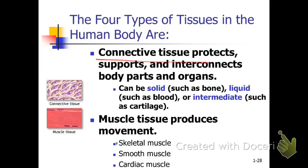Then there's muscle tissue, which comes in three types. This includes skeletal muscle — the kind that moves your skeleton — smooth muscle, found for example in your intestines, and cardiac muscle, which is found only in the heart.